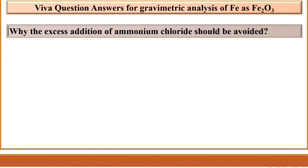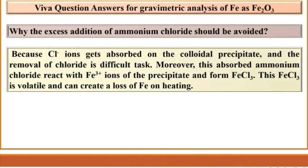Why should the excess addition of ammonium chloride be avoided? Because Cl⁻ ions get absorbed on the colloidal precipitate and the removal of chloride is a difficult task. Moreover, this absorbed ammonium chloride reacts with Fe³⁺ ions of the precipitate and forms FeCl₃. This FeCl₃ is volatile and can cause a loss of Fe on heating.